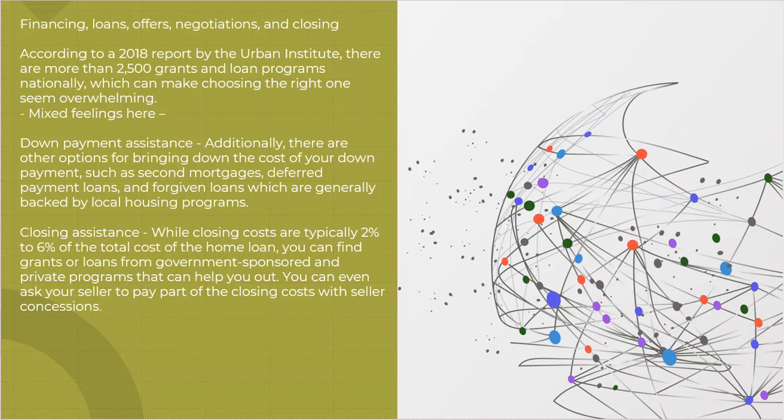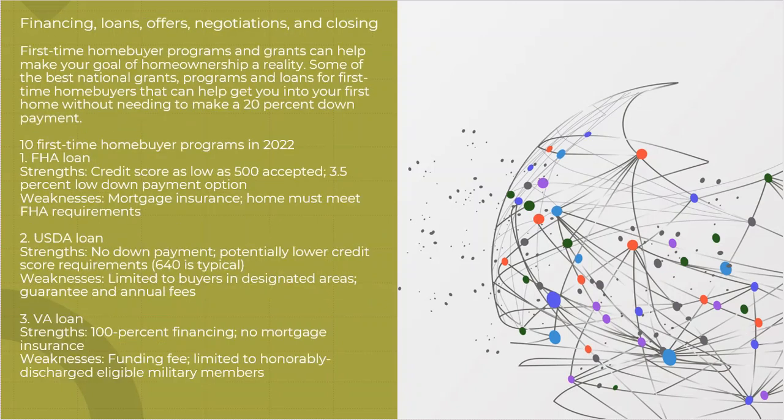Typically, closing costs are 2% to 6% plus loan fees. There are many grants out there that are government-sponsored and private entities that can provide these grants that are designed to help with the closing cost. In some cases, you might even ask the seller to give concessions. Now, depending on the market that you're in, that's probably not going to fly, but that's not necessarily 100% true.